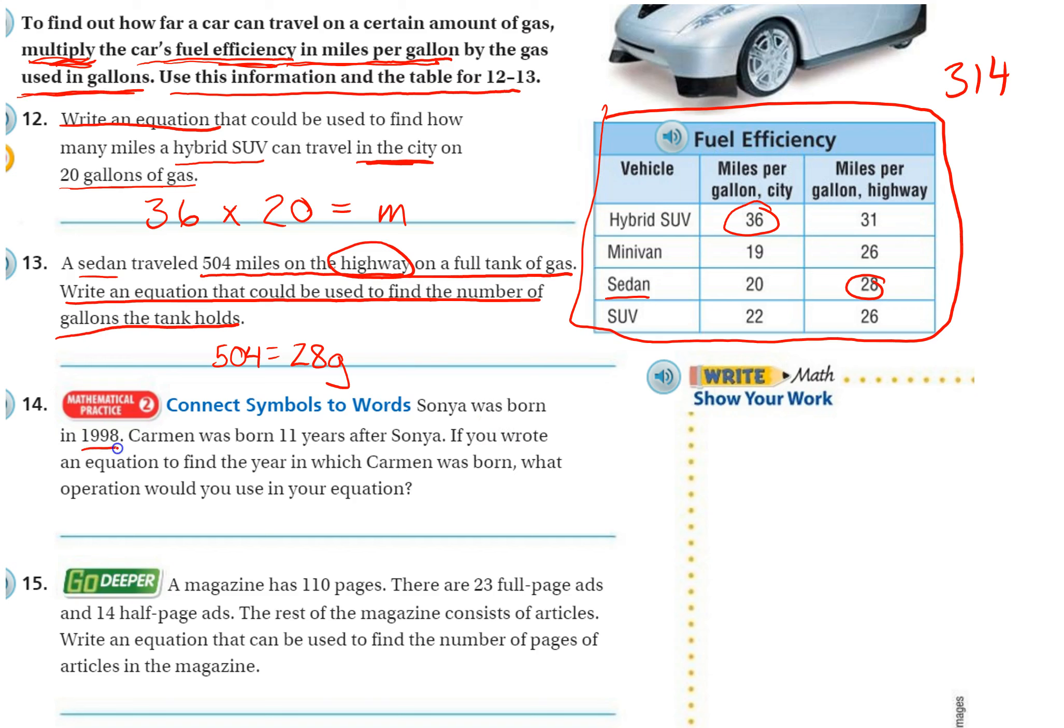Number 14. Sonia was born in 1998. Carmen was born 11 years after Sonia. If you wrote an equation to find the year in which Carmen was born, what operation would you use in your equation? So if you're finding 1998 and then 11 years after Carmen was born, Sonia was born in 1998. Carmen was born 11 years after Sonia.